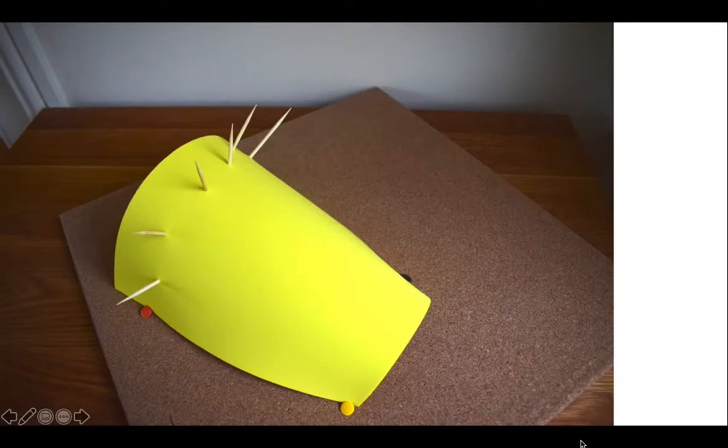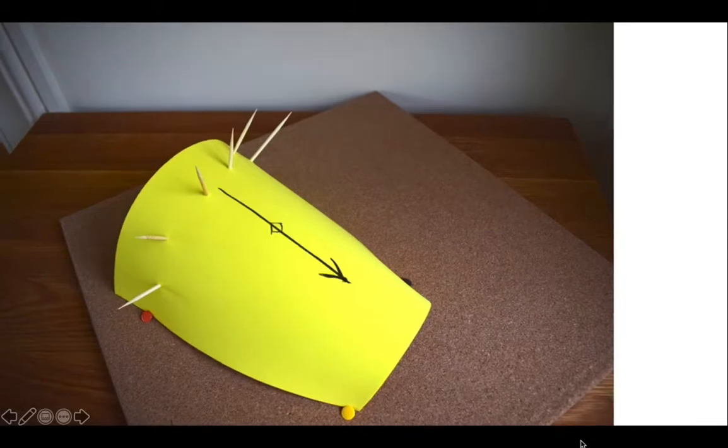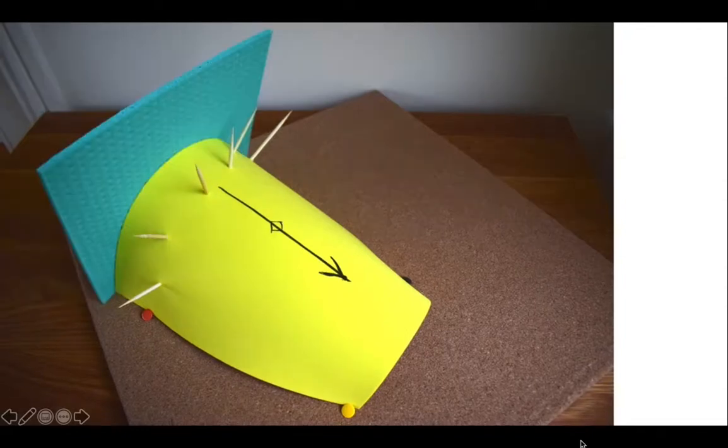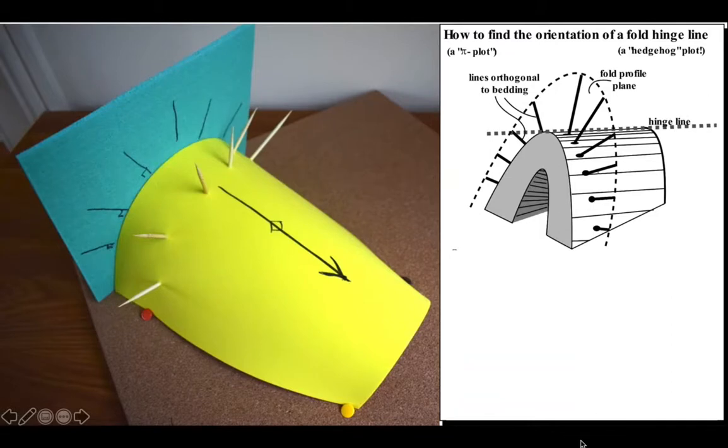Here we have our poles to the yellow layer poking out from that layer at 90 degrees, fanning around the fold structure. Here's the hinge line of the fold plunging down to the bottom right. What's the relationship between these poles to the layer and the fold geometry? Let's put in the fold profile plane, perpendicular to the hinge line. The poles to the layer all lie within the profile plane. Therefore we can use the poles to the folded layer to find the profile plane, and then using the profile plane orientation, find the fold hinge line orientation.